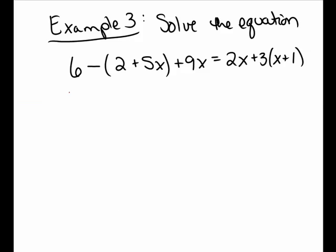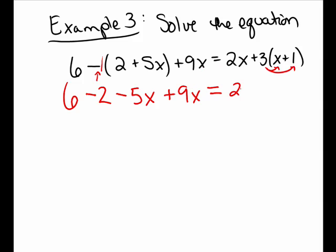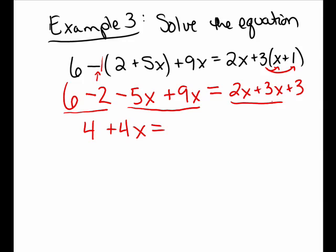The third equation. Again, I want to simplify on the left, so I distribute the negative — you could think of this as negative 1 in front of the parenthesis. I distribute that negative 1 to make negative 2 minus 5x, and I'm also adding 9x on the left side. On the right side, I need to distribute the 3, so I have 2x plus 3x plus 3. Gathering and combining like terms: on the left, 6 minus 2 makes 4, and negative 5x plus 9x is 4x. On the right, 2x added to 3x makes 5x.